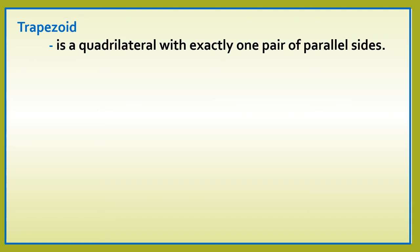Let us define first trapezoid. Trapezoid is a quadrilateral with exactly one pair of parallel sides.